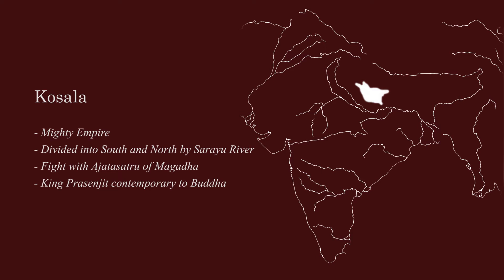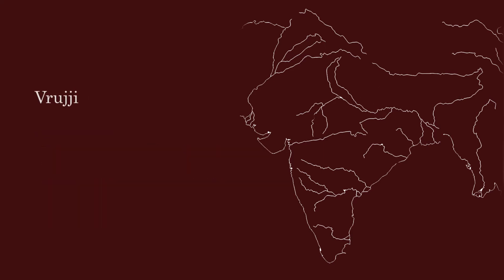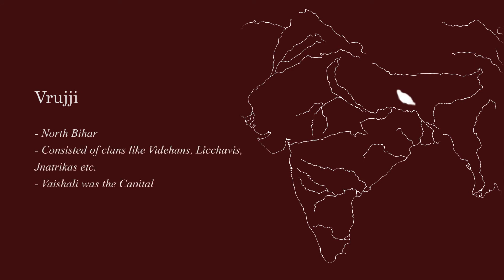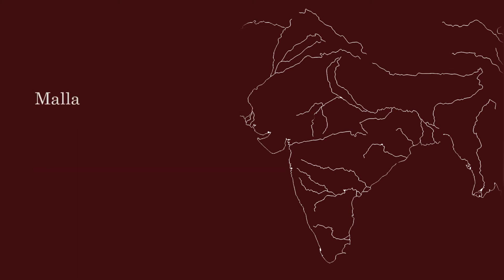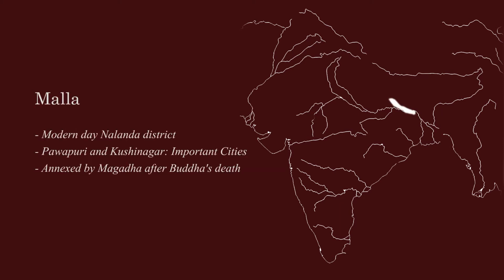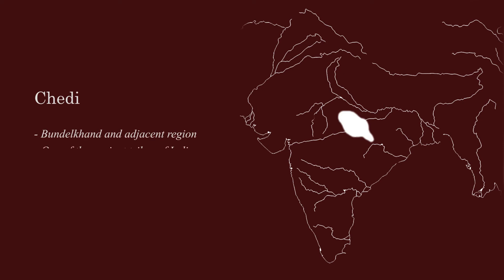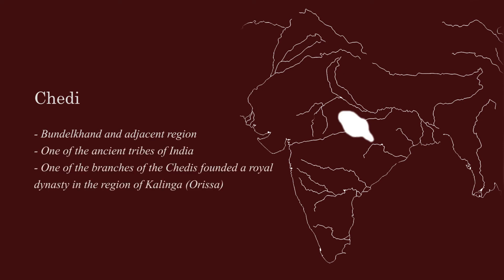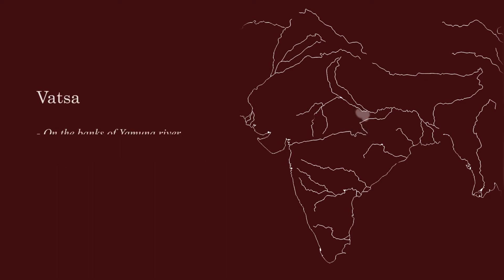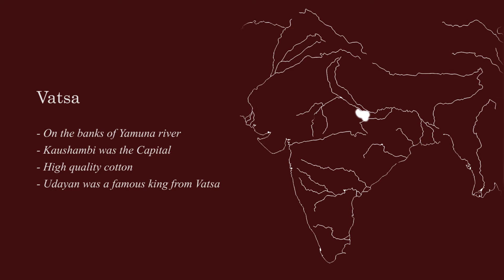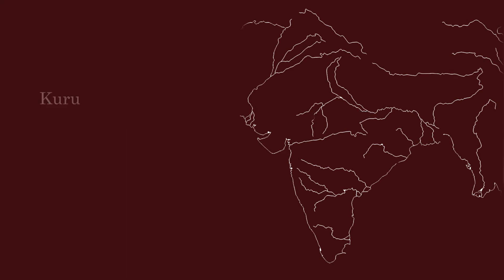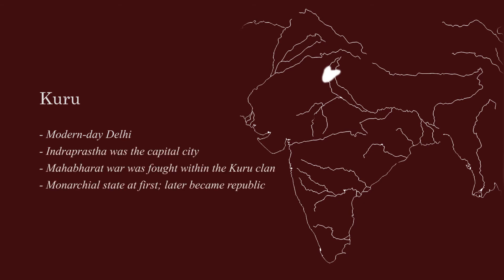In the earliest stages of its formation, Kosal was engaged in a conflict with King Ajatashatru of Magad. Vridji was located in the modern-day Muzaffarpur district of northern Bihar, administered from the capital city of Vaishali. Malla was near the present-day location of Nalanda district in Bihar and was eventually annexed by Magad soon after Buddha's death. Chedi was the name of one of the ancient tribes in India, and one of the branches of the Chedis founded a royal dynasty in the region of Kalinga. Vatsa was situated on the banks of the river Yamuna, ruled over by the famous king Udayan from the capital city of Kaushambi. Initially a monarchy, Kuru later became a republic and was administered from the capital city of Indraprastha.